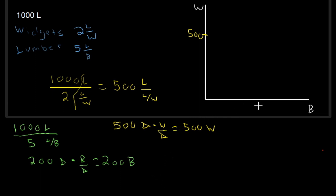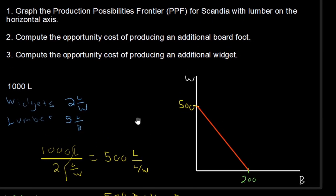So if we go and put that up here, let's say that's somewhere around there, we have 200. We can take this then, we can create our production possibilities frontier by just connecting these two extreme points as such, and we have our production possibilities frontier. Let's see, did we fully answer that first question here? Graph the production possibilities frontier for Scandia with lumber on the horizontal axes. So there we go, lumber is measured in number of board feet. Done. Question 1 is great.